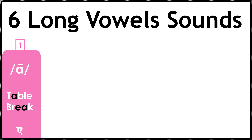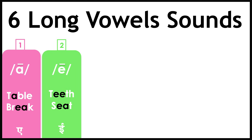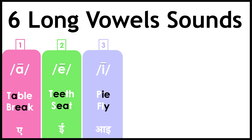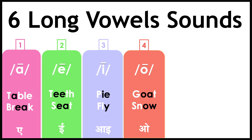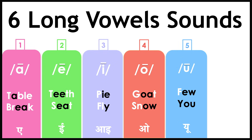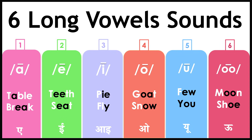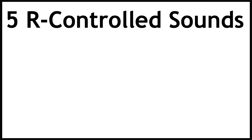Now let's look at the six long vowel sounds: /eɪ/ — table, break; /iː/ — teeth, seat; /aɪ/ — night, ring; /aɪ/ — eye, hi, fly; /oʊ/ — goat, snow; /juː/ — few, you; /uː/ — moon, shoe. These are the six long vowel sounds.